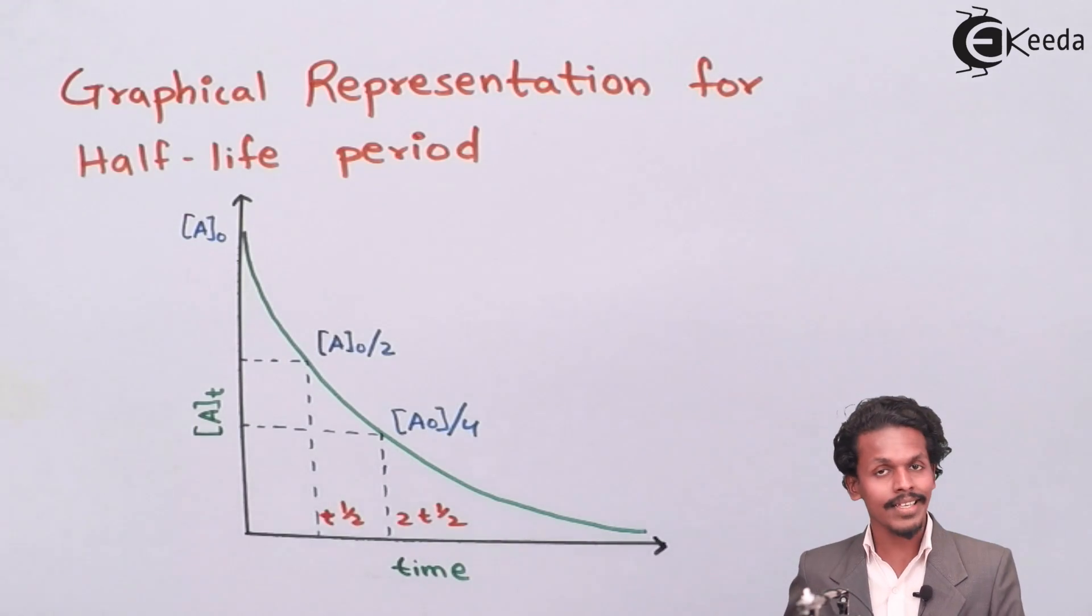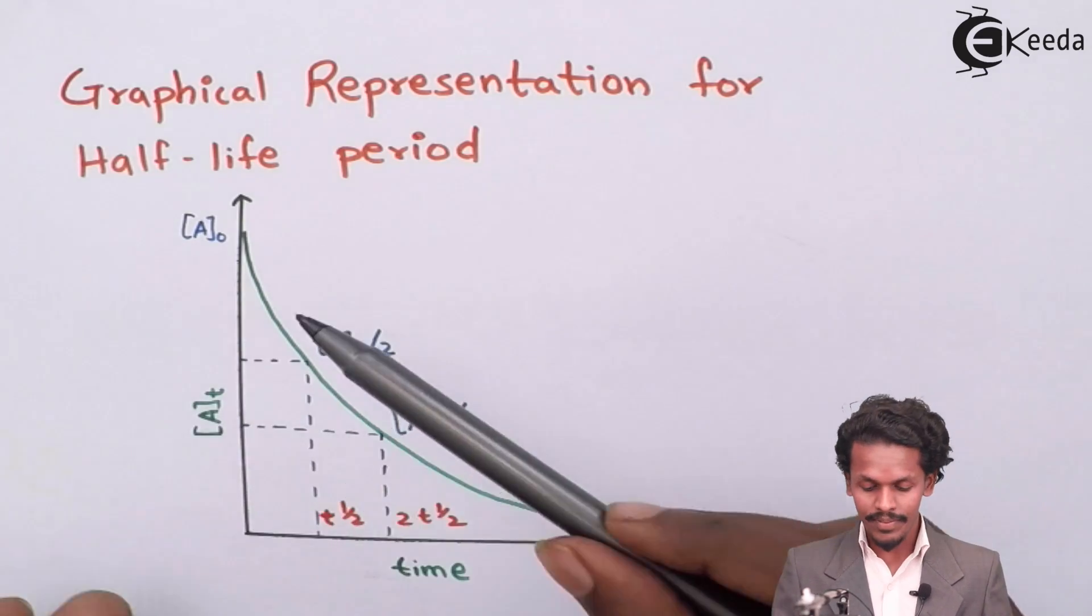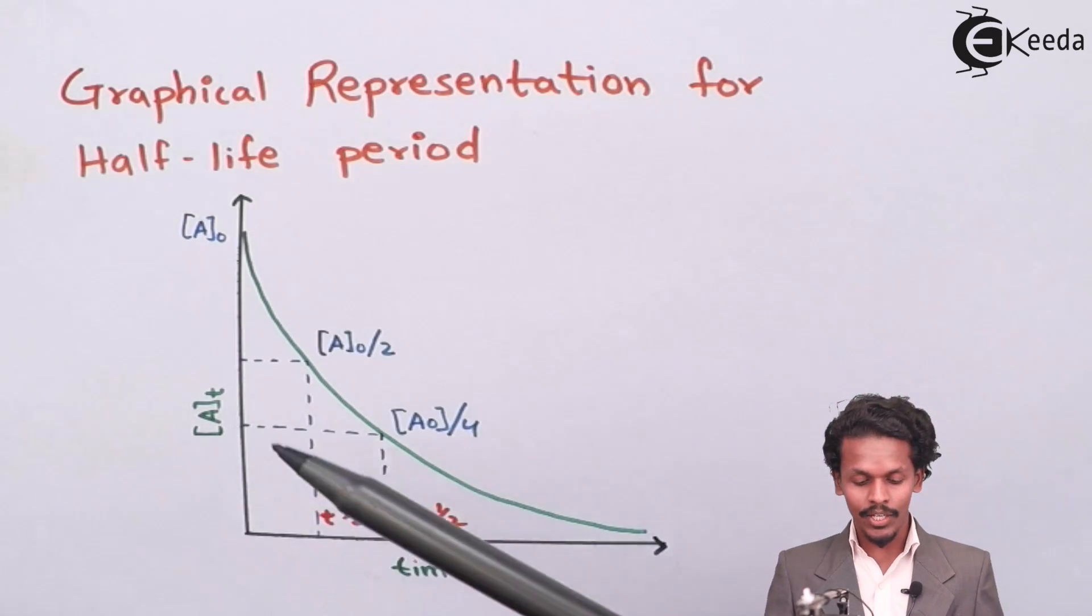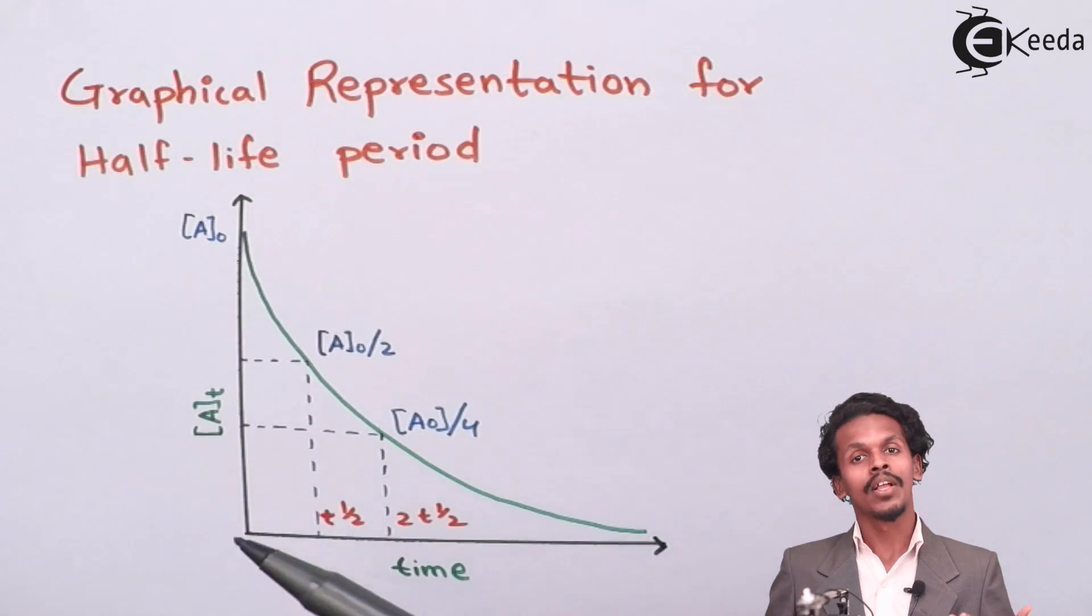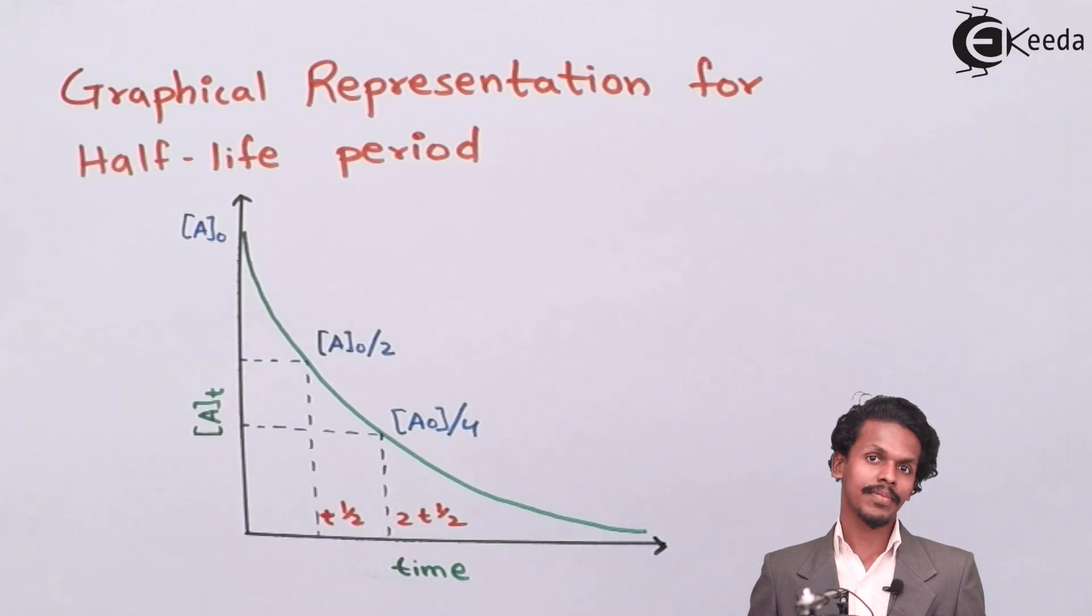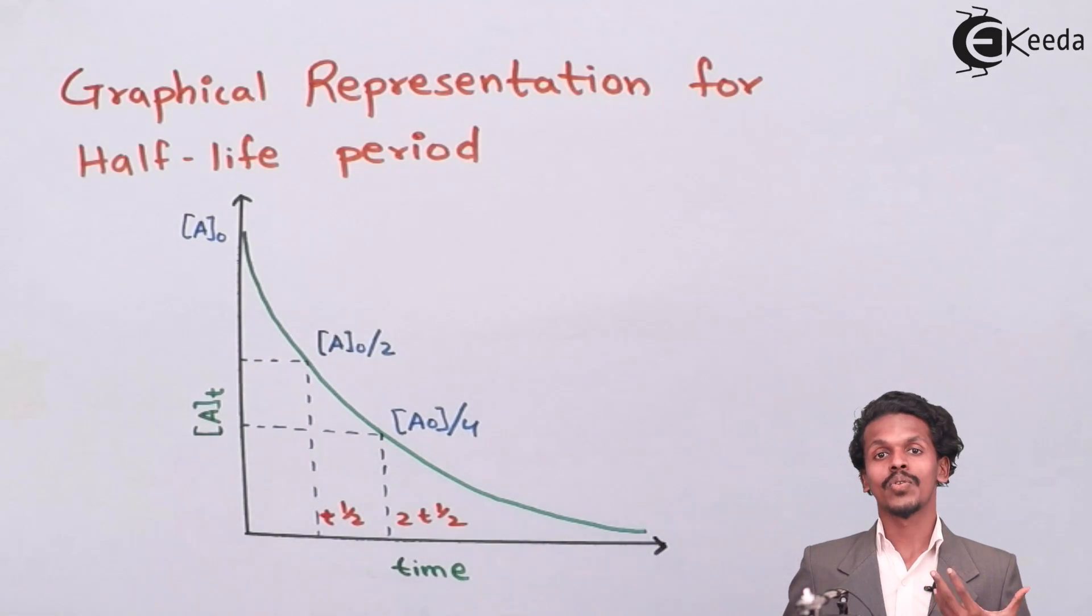And as we can observe in the graph, as time increases the half-life and the time increases, the concentration of A0 also decreases. So this is what the half-life graph means.